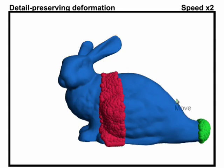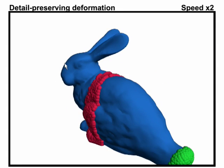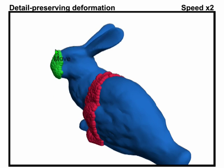Detail preserving techniques treat the edited object to be made of a homogeneous, rubber-like material that responds uniformly to user manipulations.